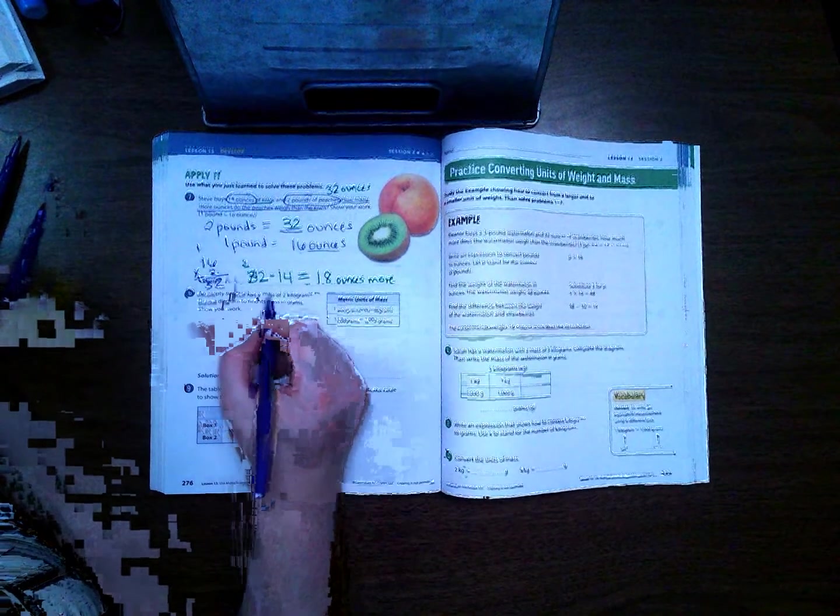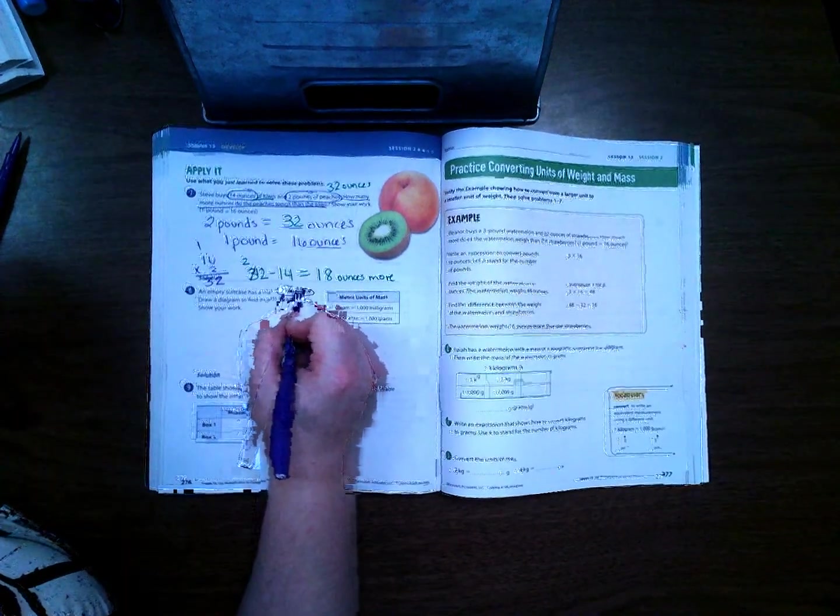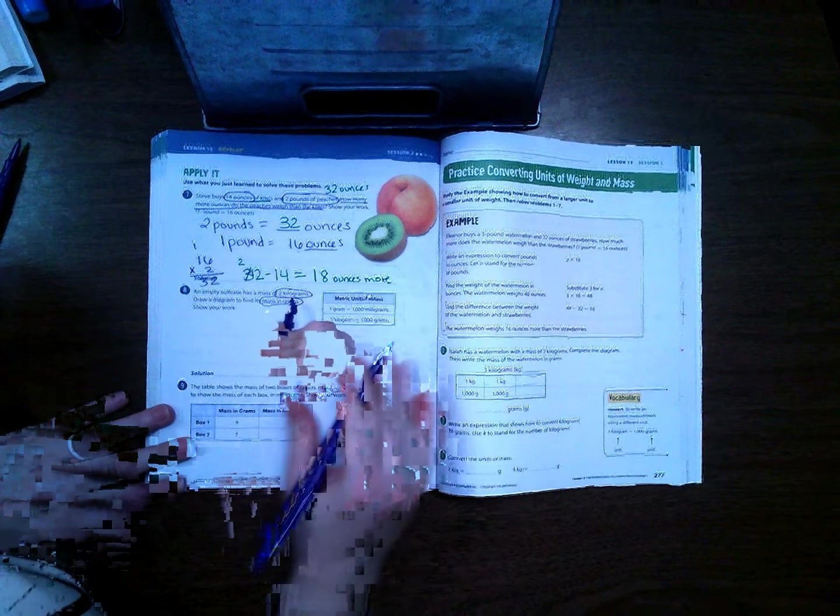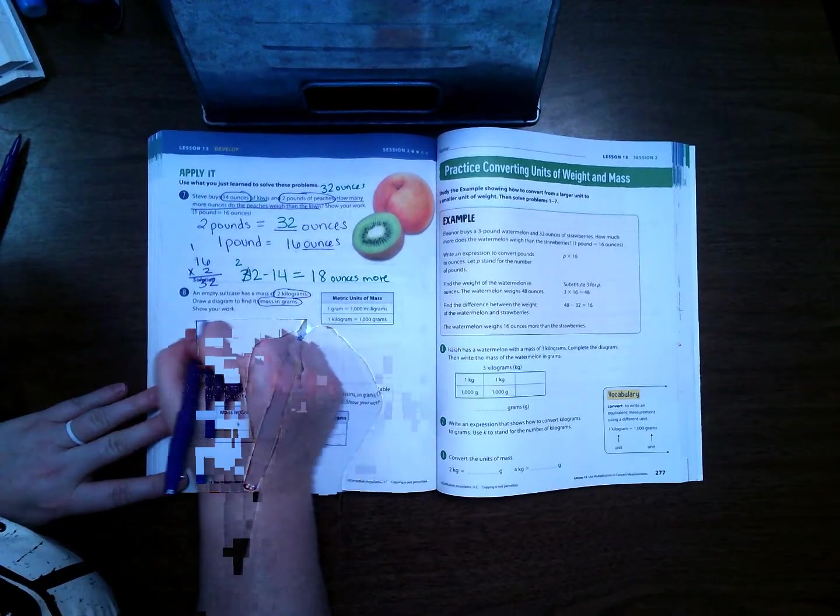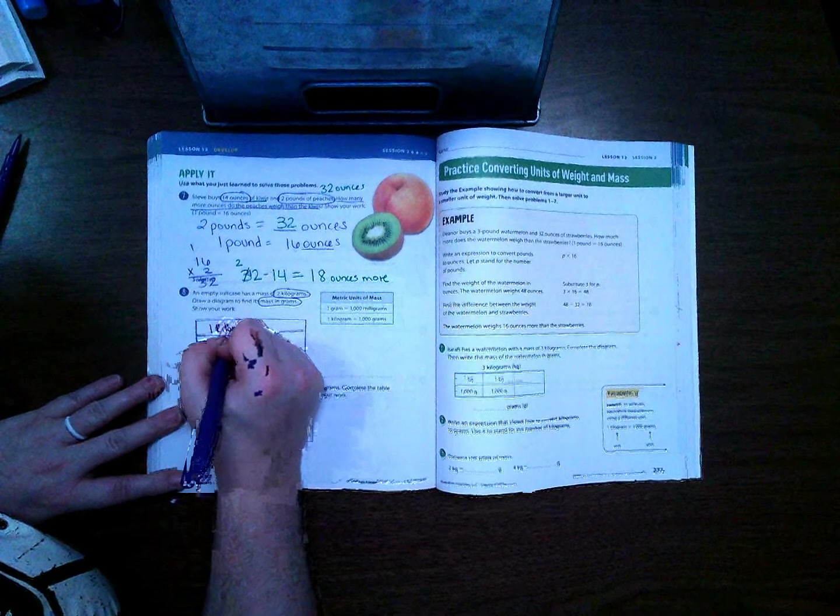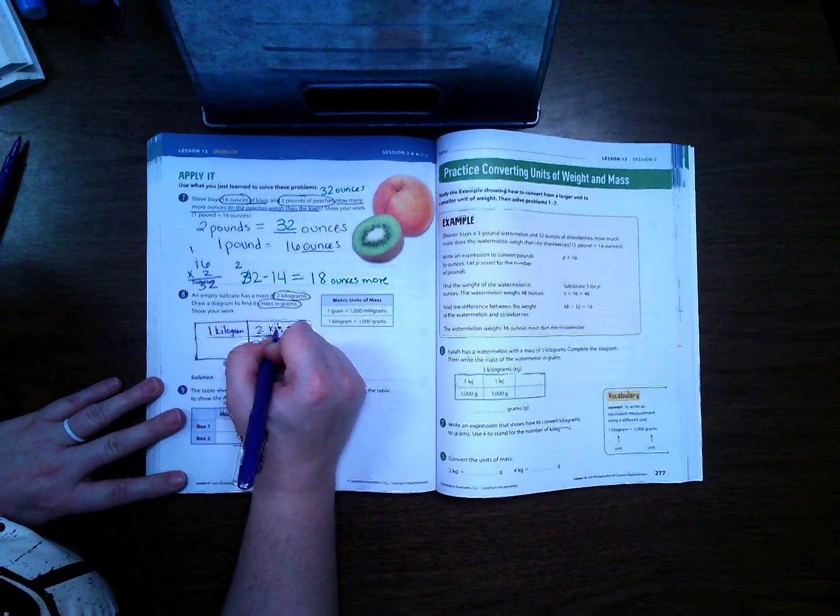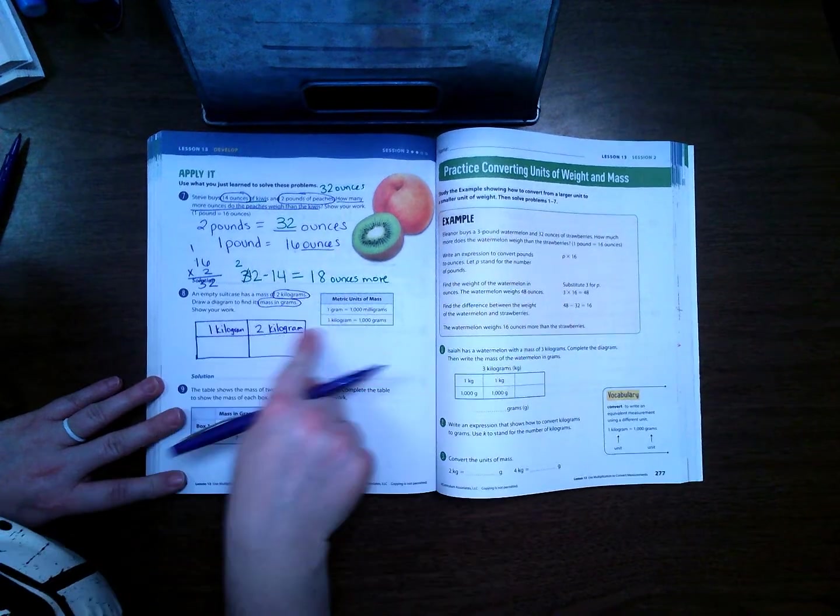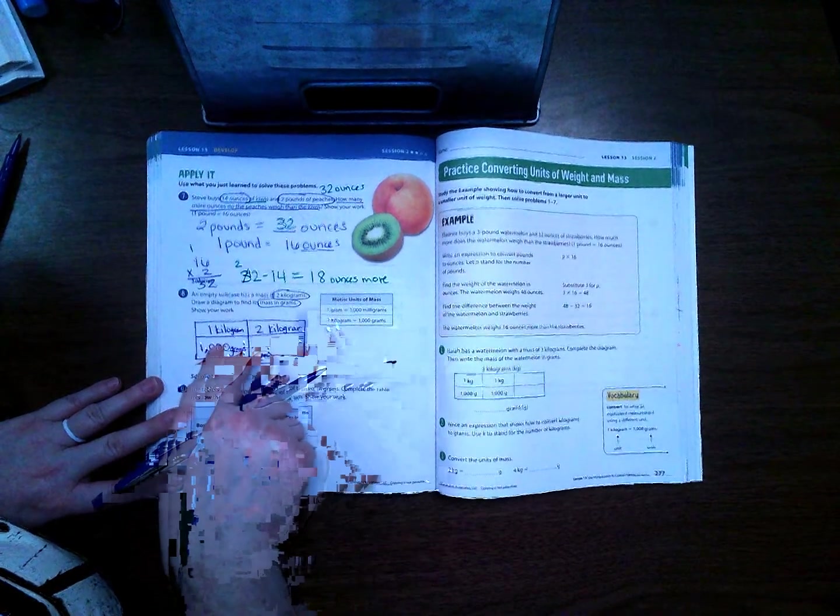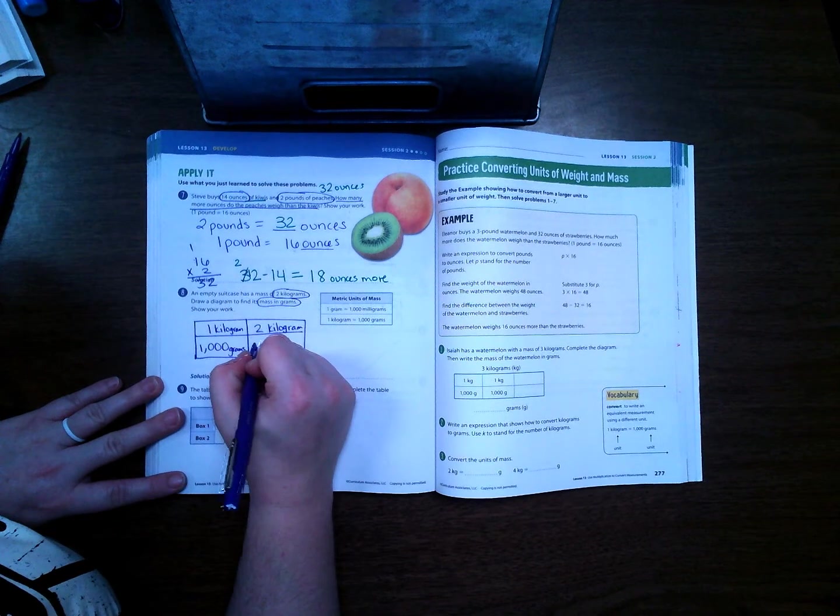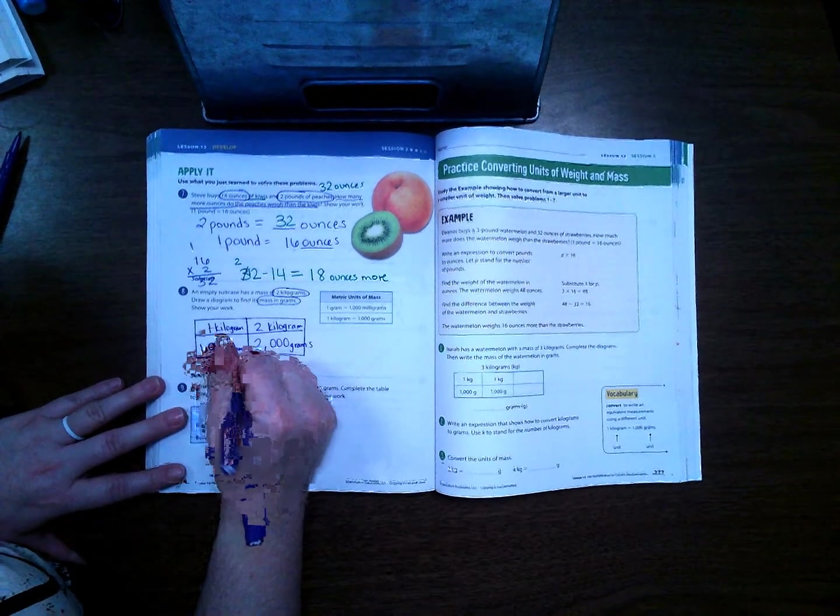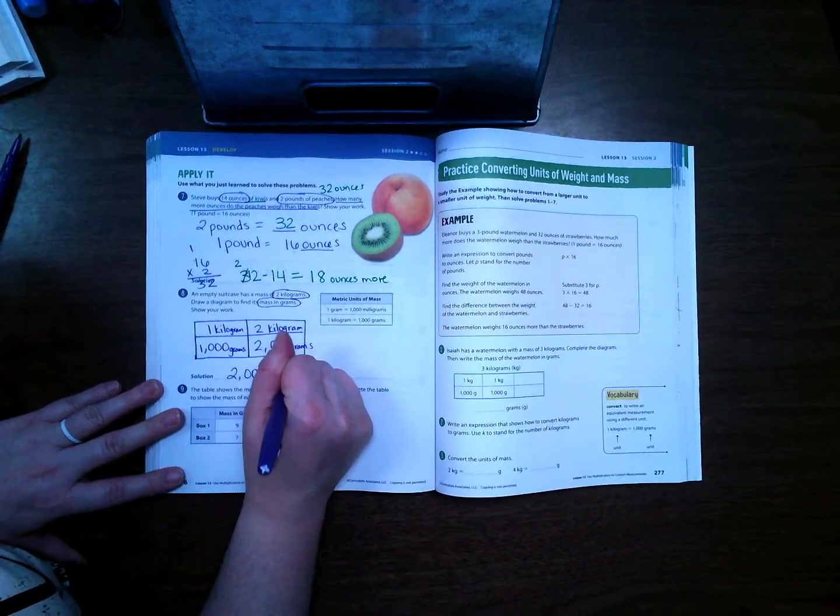An empty suitcase has a mass of 2 kilograms. Draw a diagram to find its mass in grams. Show your work. So it says to draw a diagram. 1 kilogram, 2 kilograms. 1 kilogram is 1,000 grams, so 2 kilograms, we're going to add 1,000 each time, must be 2,000 grams. So our answer is 2,000 grams.